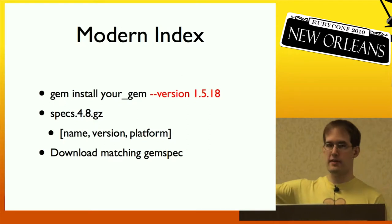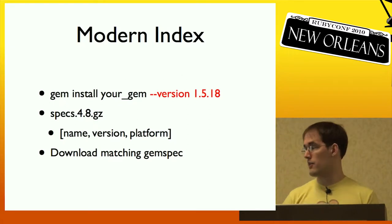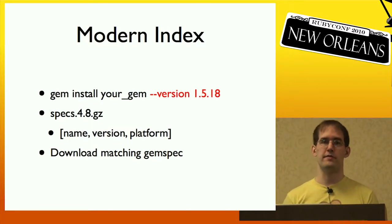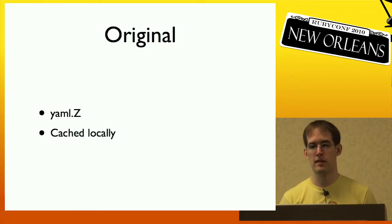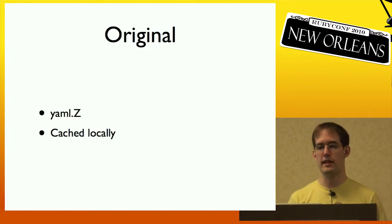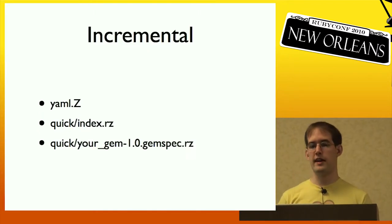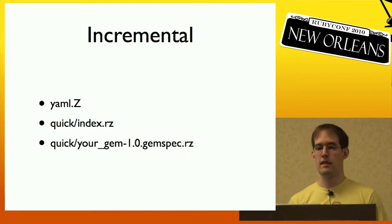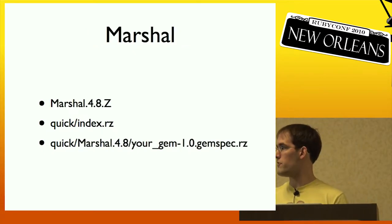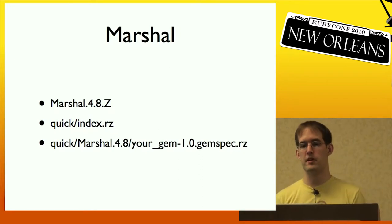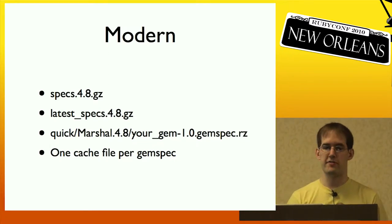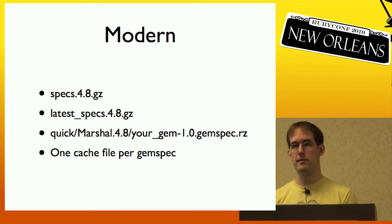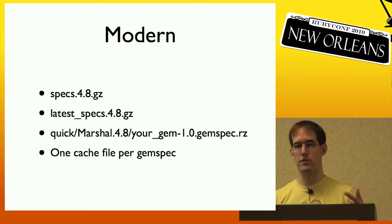If you provide a version, it downloads a specs file which is just a little bigger, and the rest of the process is the same. To recap: the problem with the index was a scaling problem. Originally there was one big YAML file cached locally — too big and too hard to update. So we added the quick index with a gem spec per gem. That was too slow, so we added the Marshall file and Marshall version gem specs, plus persistent connections. Finally we replaced that with two specs files — one for the latest gems, one for all gems — and a cache file per gem. The on-disk format is also now one cache file per remote file, so you only have to load one file at a time.